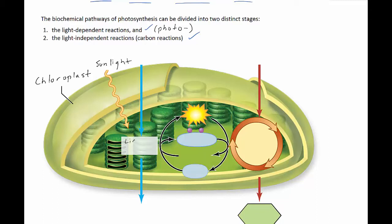These are the light-dependent reactions, and they're referred to as light-dependent because in the absence of light, these reactions cannot occur. The sunlight energy captured by pigments is then stored into two energy-rich molecules: ATP and NADPH. NADPH actually carries a pair of energized electrons that it has taken from chlorophyll. In order to replace those two electrons that NADPH has taken from chlorophyll, chlorophyll splits water to take electrons from the water and produces oxygen as a by-product.